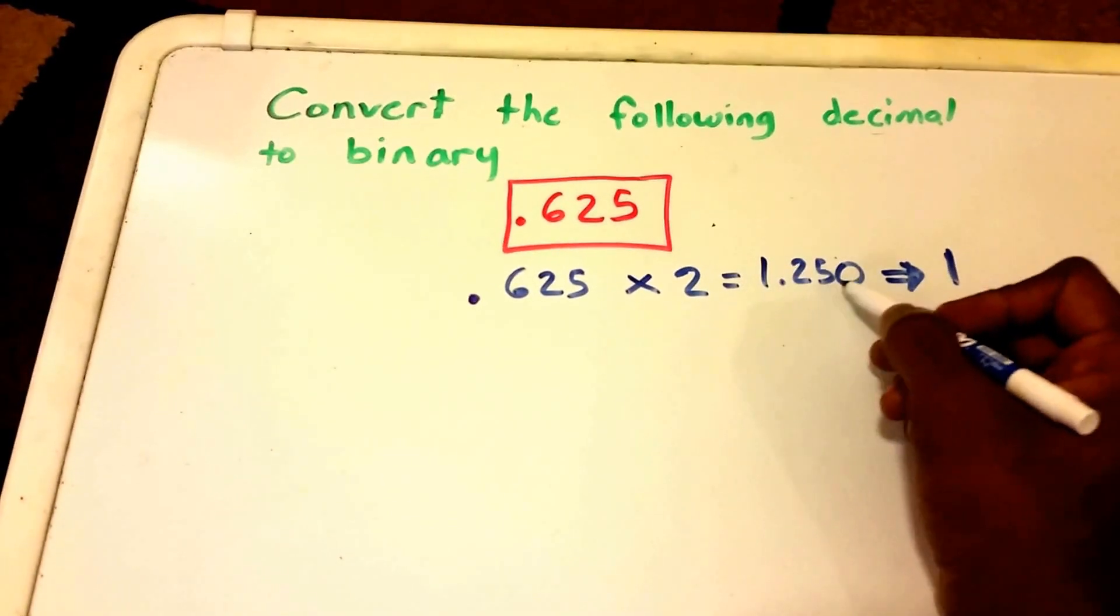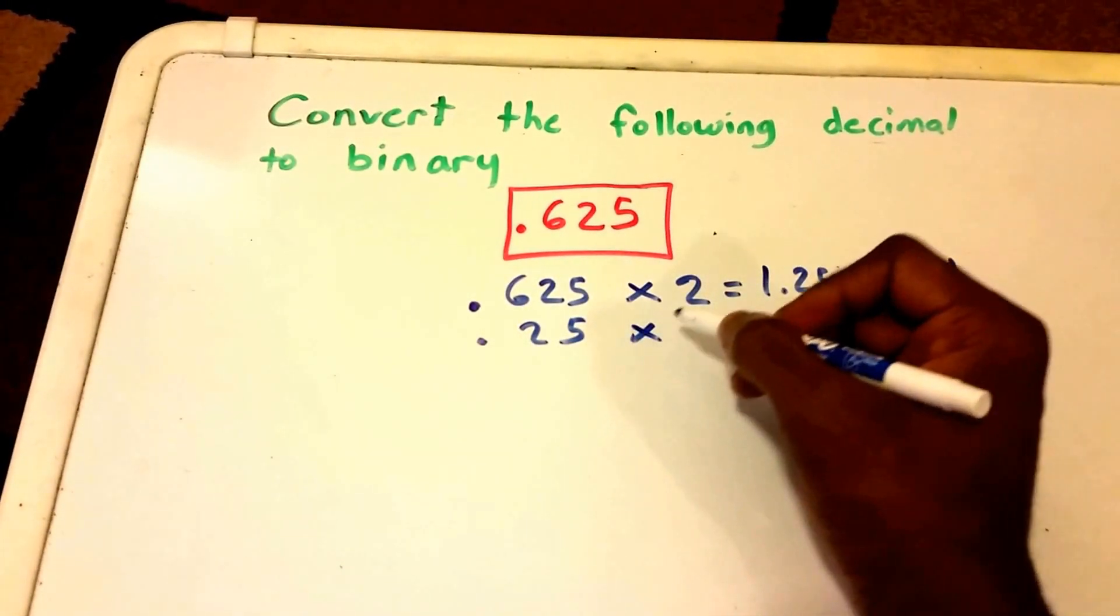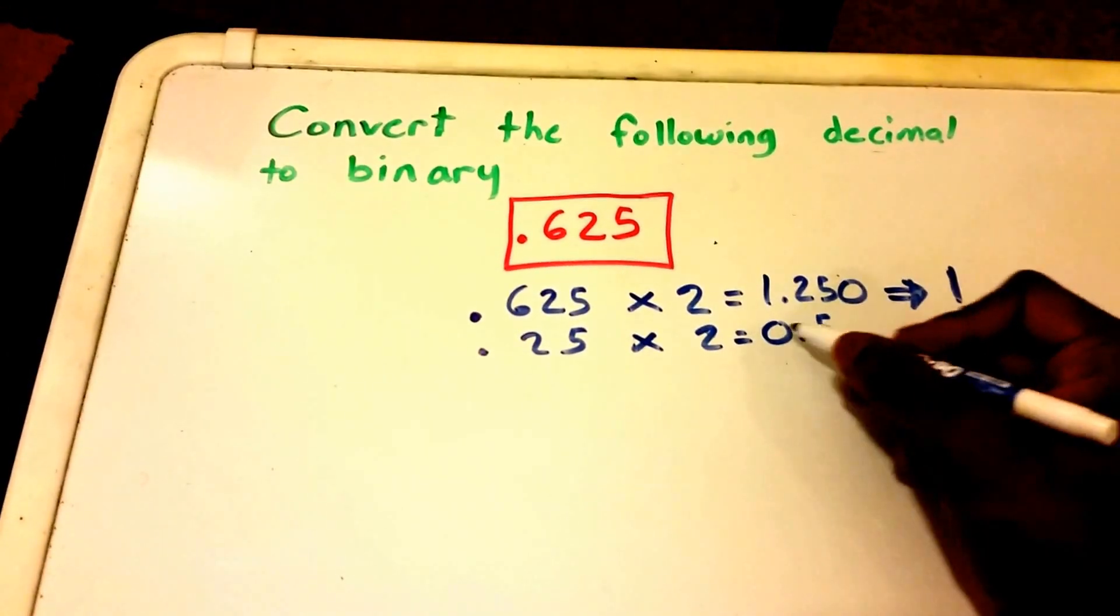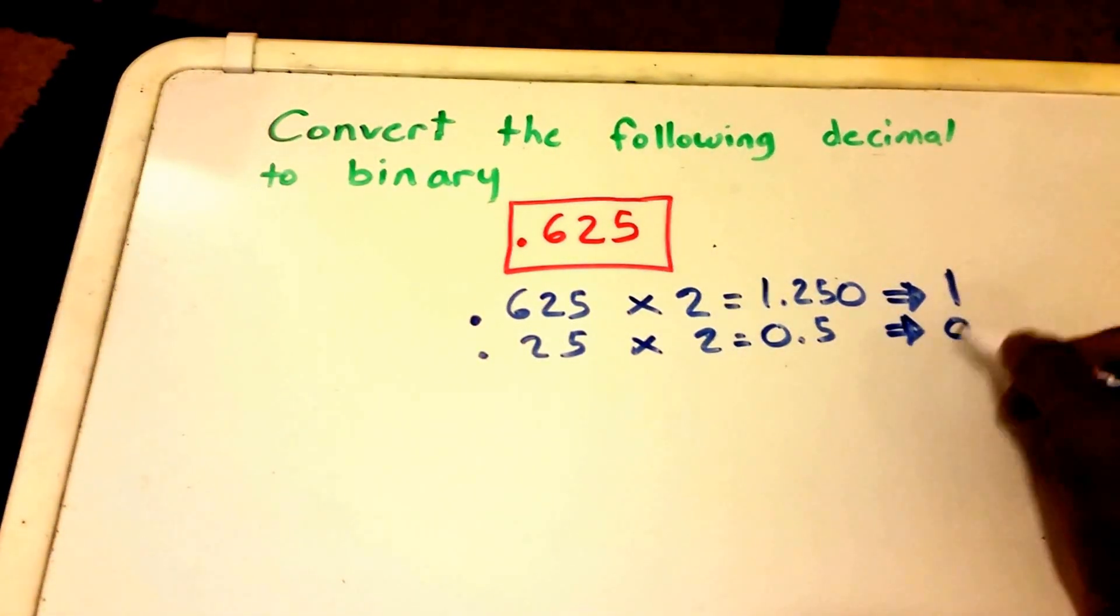Then we take the remainder which is 0.25 and we're going to multiply that by two to get 0.5 and we take the whole number there which is 0 and it's going to become our second binary digit.